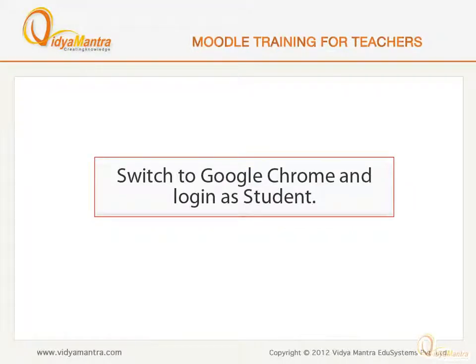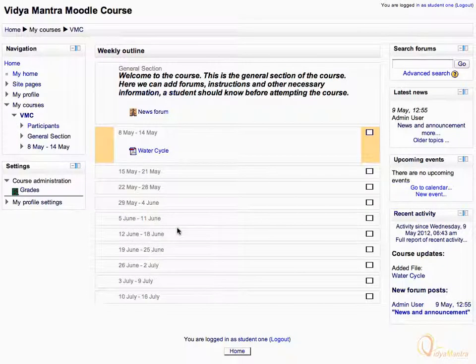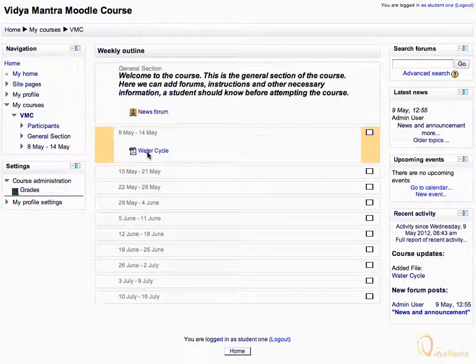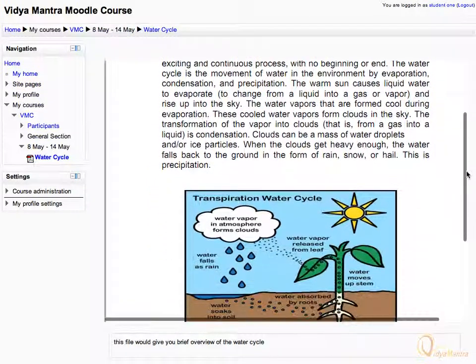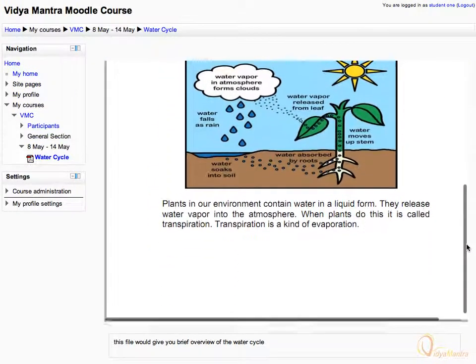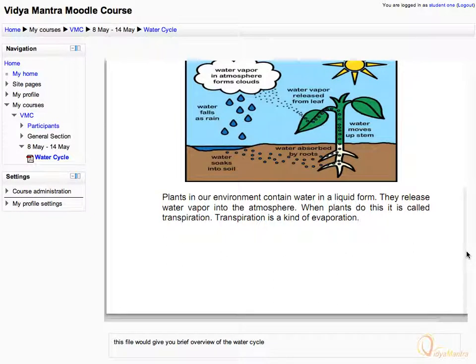Switch to Google Chrome and log in as a student to view the file. This is how any student will see the course. Click water cycle file to open it. The file has opened in embedded view and in the same window. You can scroll the file by tracking the sidebars or by clicking in the text area and using your mouse wheel. But you cannot download this file.